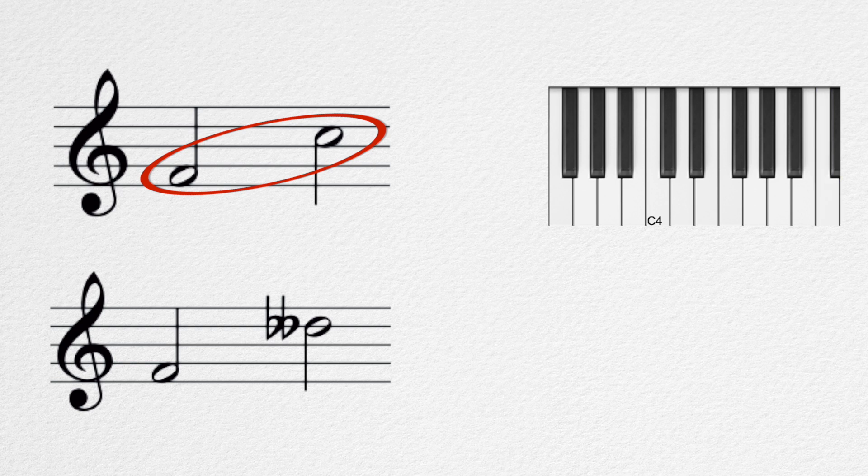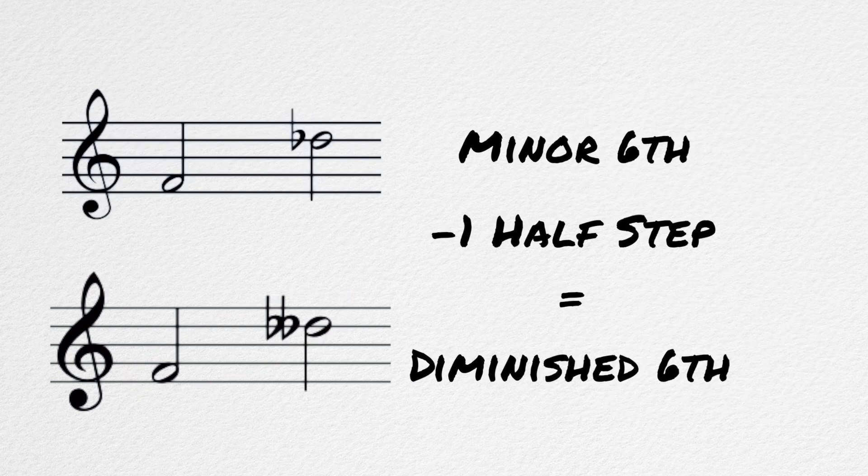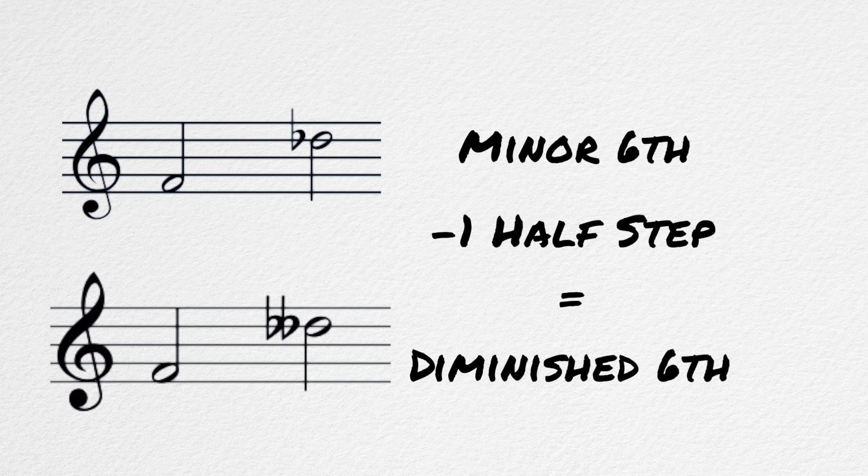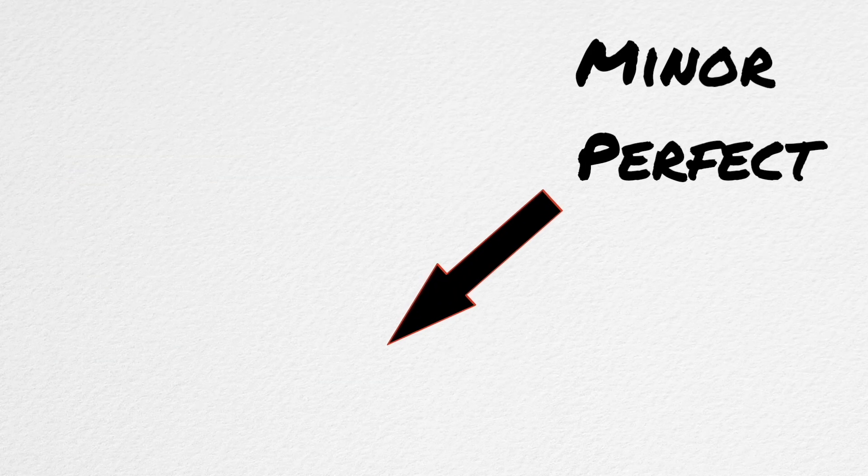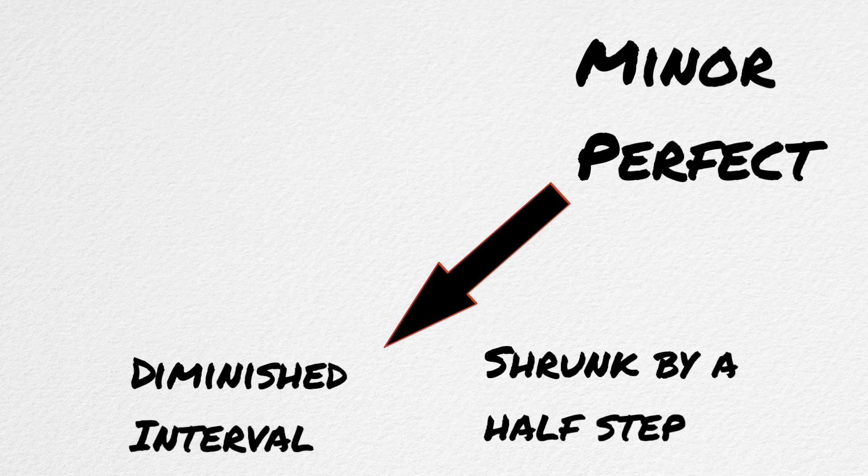These two intervals sound the same as well. But the minor 6th is dragged down by a half-step and is made smaller. And thus, it is referred to as a diminished 6th. Any minor or perfect interval that is dragged down by a half-step is referred to as a diminished interval.